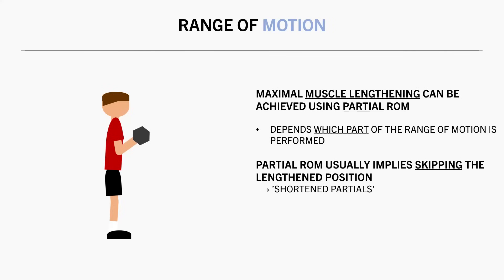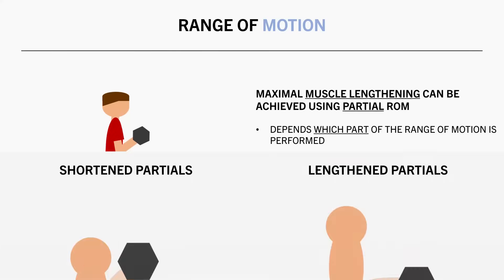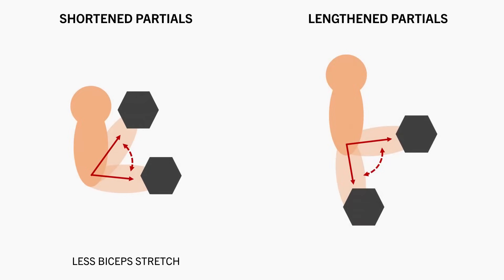This is what we would call shortened partials. However, partials can also be performed in the lengthened range only, where we skip the shortened range — this can be termed lengthened partials. For example, during bicep curls, only performing the top half of the movement would be shortened partial reps, which wouldn't stretch the biceps as much. But if just the bottom half of the movement is performed, this would be lengthened partials and would still achieve the same level of muscle stretch compared with full range of motion curls.